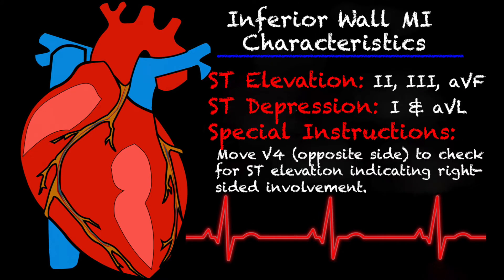Looking at the EKG when we're talking about an inferior MI, you're going to look for leads 2, 3, and AVF to have ST elevation. And if you're looking for reciprocal depression, you're going to look in your high lateral leads like lead 1 and AVL. Now typically AVL always has reciprocal depression, but in lead 1 sometimes it's not there. That basically just goes into which part is occluded — is it an RCA occlusion or does it have to do with the left circumflex?